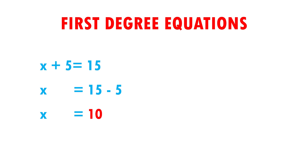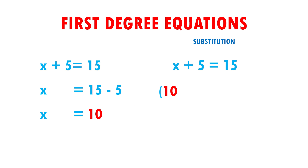To know if our result is correct, we must substitute — this means I'm going to copy the equation exactly the same, and instead of putting the x, I'm going to put its value. The original equation is x plus 5 equals 15. Instead of putting the x, I put its value, which is 10. So it remains as 10 plus 5 equals 15. When adding 10 plus 5 gives me 15, and this is equal to 15. Therefore, we can say that our result is correct, because both sides of the equation are exactly the same. Very easy, right?